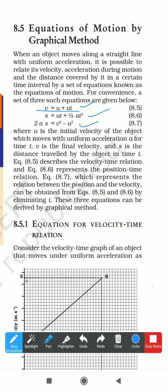The first equation is the velocity-time relation, where v is final velocity, u is initial velocity, t is time, and a is uniform acceleration. The second equation is the position-time relationship, where s is distance traveled, u is initial velocity, t is time, and a is uniform acceleration. The third equation, 2as = v² - u², is called the position-velocity equation because it contains no time variable t.